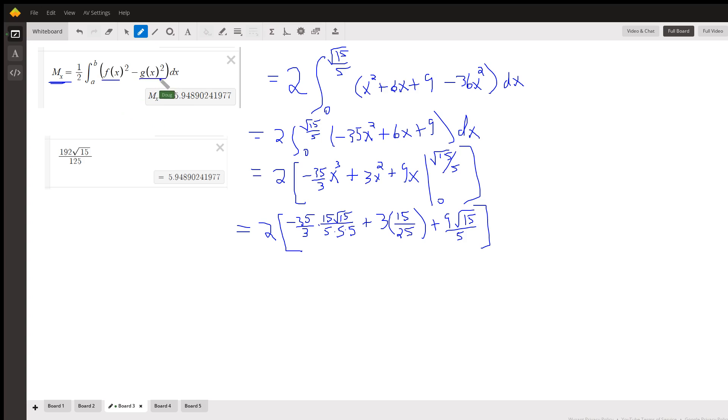Similarly, these are even functions, so we could just go from 0 to b and multiply by 2. Here's f of x squared, here is g of x squared. Subtract and find the antiderivative.